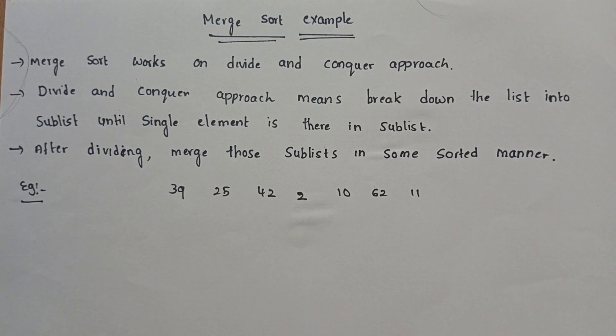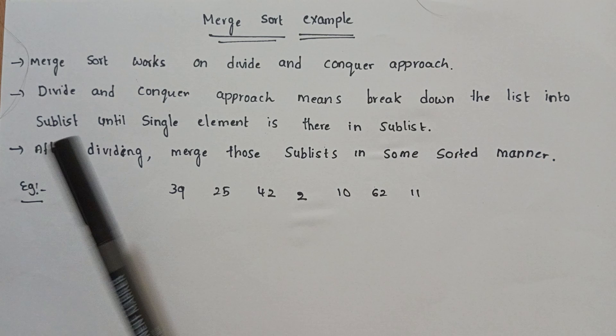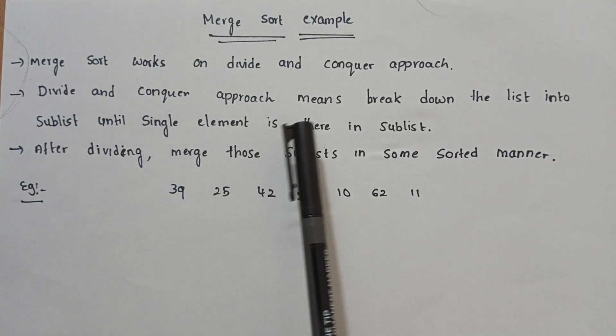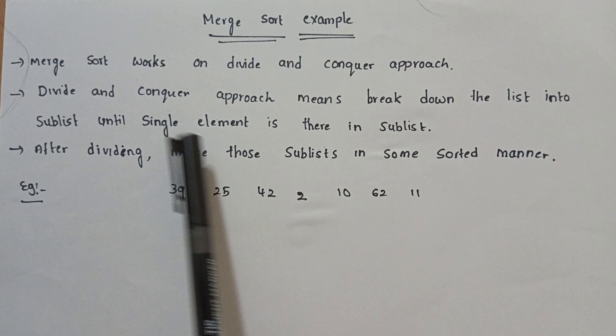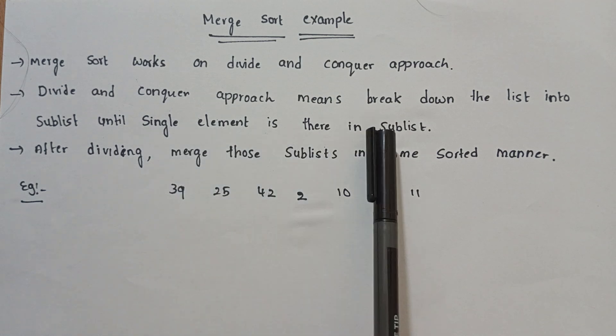Merge Sort works on divide and conquer approach. Divide and conquer approach means break down the list of elements into sublists until a single element is there in the sublist.